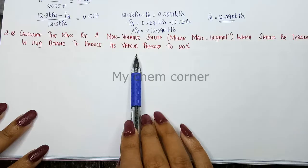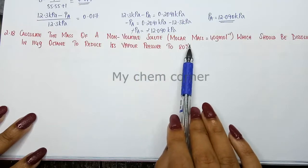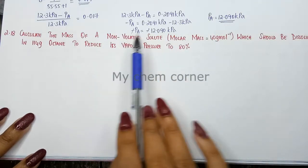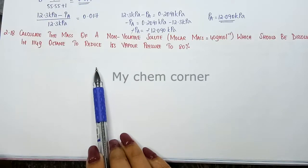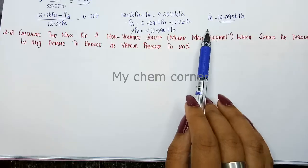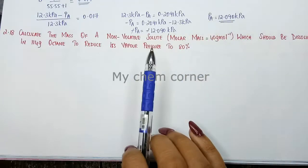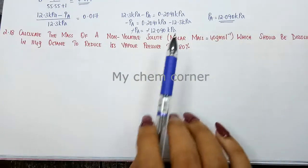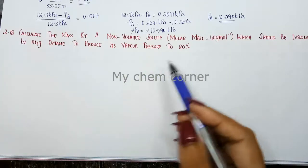In this case, they are clearly giving certain values and you have to find this mass from it. Since vapor pressure is given, obviously the formula to use is relative lowering of vapor pressure.